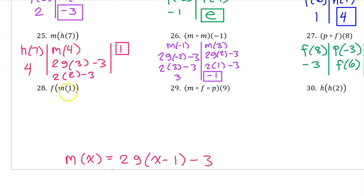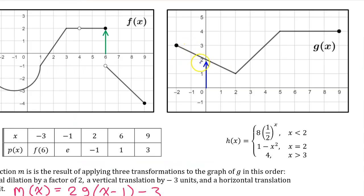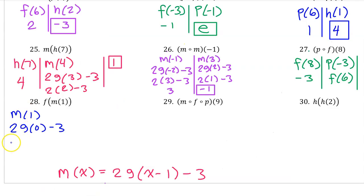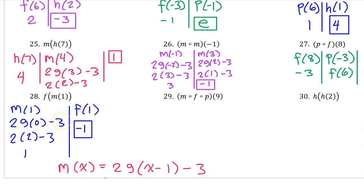Number 28. For this notation we work from the inside out, so we begin with M at 1. This means plug 1 in for X: 1 minus 1 is 0, so the expression becomes 2·G(0) − 3. G at 0 is 2, so this becomes 2 times 2 minus 3, which is 4 minus 3 = 1. Moving to the outside we must now evaluate F at 1. F at 1 is negative 1. So that's the answer.